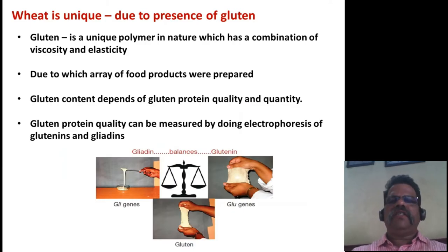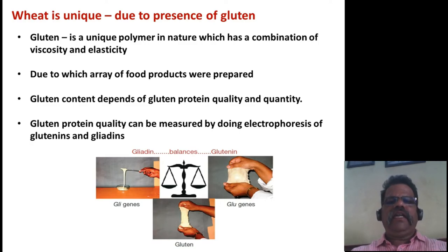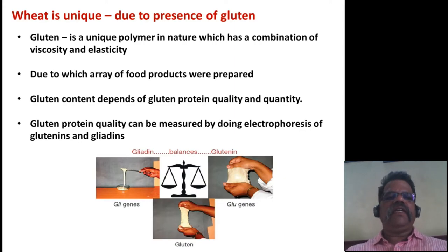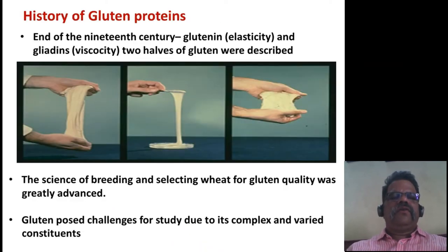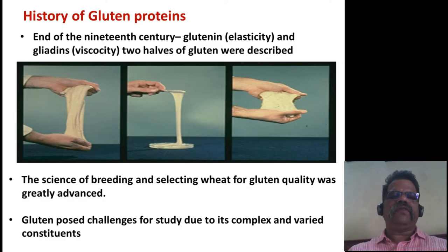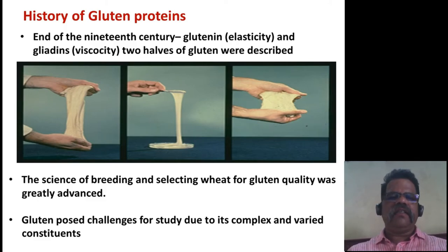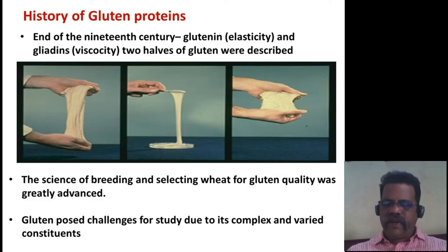Wheat is unique because it contains a unique polymer in nature that has a combination of viscosity and elasticity, due to which an array of food products can be prepared. Gluten content depends on gluten quality, gluten protein quality, and its quantity. Gluten protein quality can be measured by electrophoresis of glutenins and gliadins. By the end of the 19th century it was known that glutenins give elasticity and gliadins give viscosity to gluten. The science of breeding and selecting wheat for gluten quality was greatly advanced with the help of proteomics, genomics, and modern agricultural practices. Gluten still poses challenges because of its complex and varied constituents.